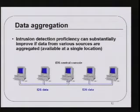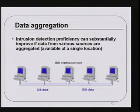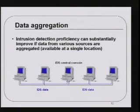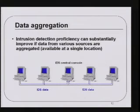Solution number one is called data aggregation, which means gathering data from different sources into one place so you can see them from a single console. For example, when you configure a Unix system, you configure /etc/syslog.conf to send certain priority levels of syslog data to certain IP addresses — normally to a central console. That helps to some degree, and you can do the same with other intrusion detection data from devices that don't use syslog.